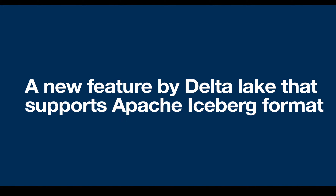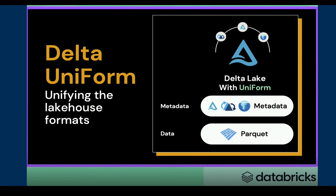UniForm is a new feature by Delta Lake that supports the Apache Iceberg format. While writing data to Delta Lake, if we enable UniForm, it writes the metadata to support Iceberg as well. It has two components: one is Parquet and the other is metadata.